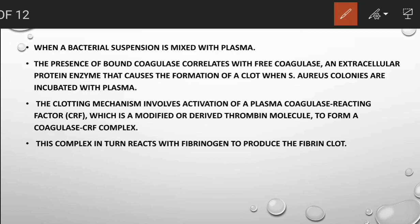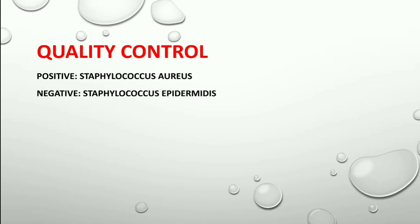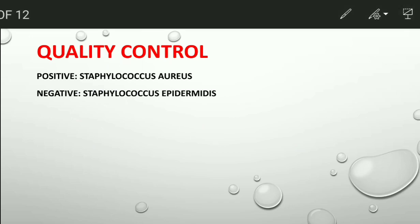The free coagulase is not bound to the bacterial cell wall, so it is mixed with plasma and incubated. After incubation, it forms a coagulase-reacting factor (CRF), which is a modified or derived thrombin molecule. It then forms a complex called the coagulase-CRF complex, which in turn reacts with fibrinogen to produce a fibrin clot.